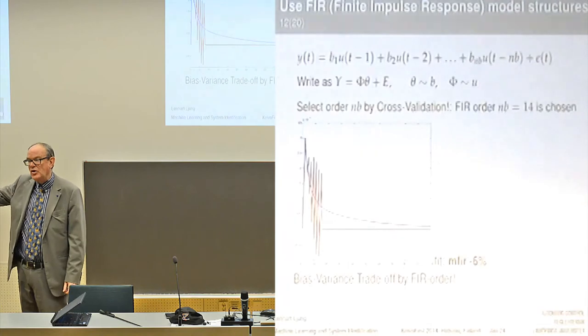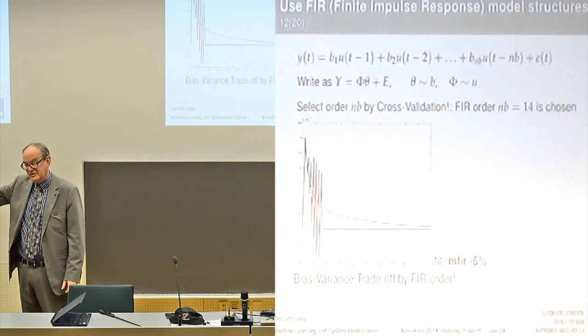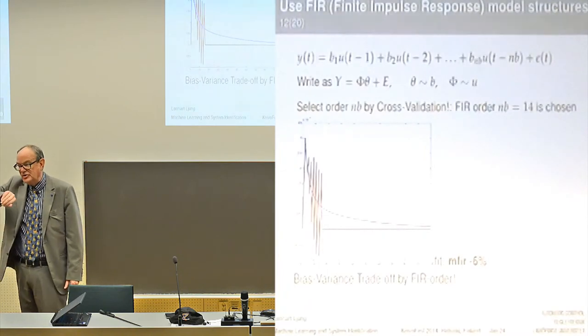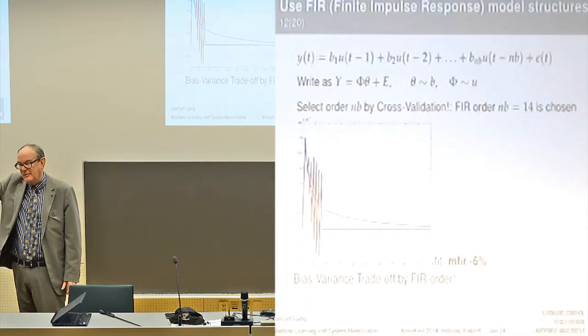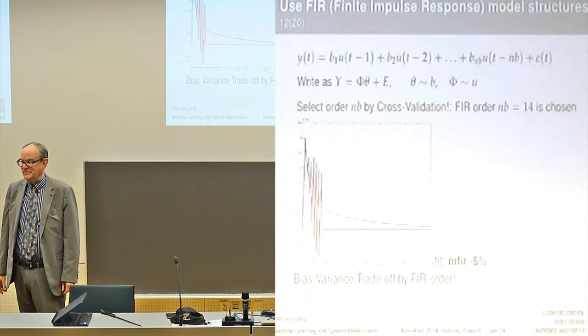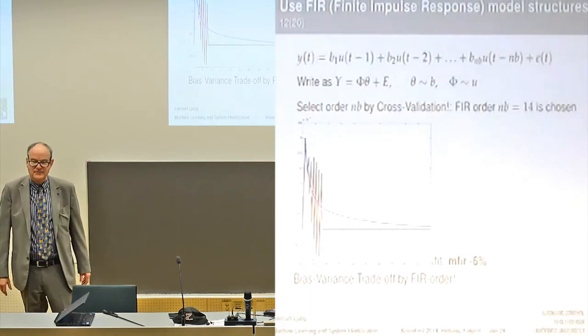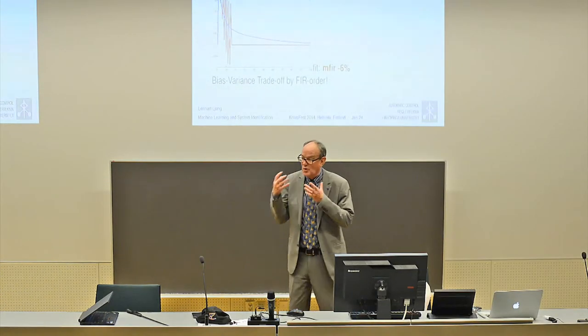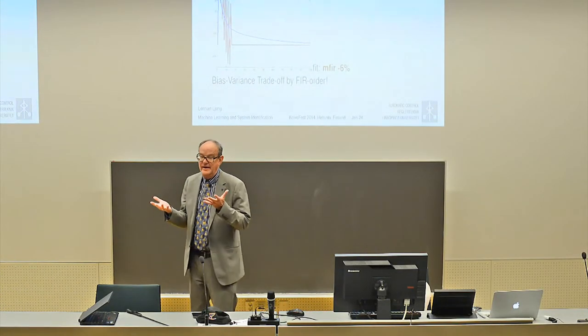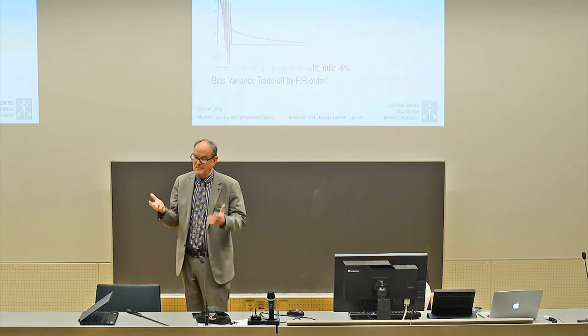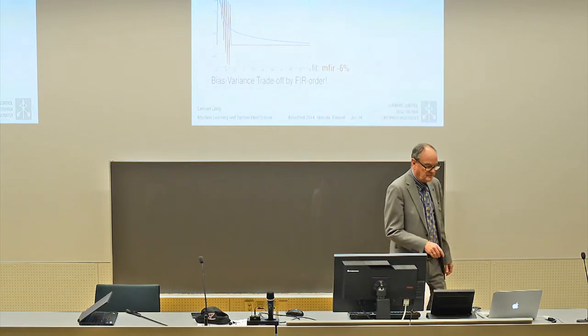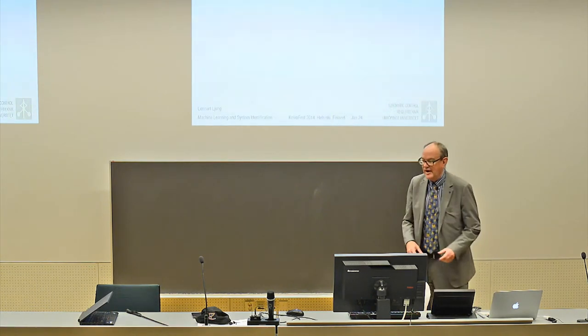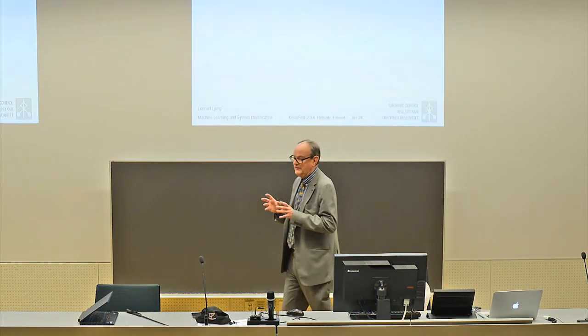If we get more parameters, it will continue further on, but it will be even wilder with the variations. For 14, this is the choice. This shows the weakness. It has just one knob, the model order, to tune the flexibility.